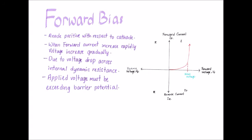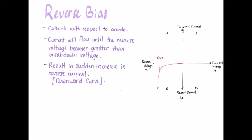When reverse biased with the cathode positive with respect to the anode, the diode blocks current except for extremely small leakage currents, and operates in the lower left quadrant of the V-I characteristic curve. The diode continues to block current until the reverse voltage across it becomes greater than its breakdown voltage, resulting in a sudden increase in reverse current producing a downward curve.